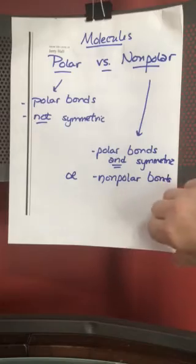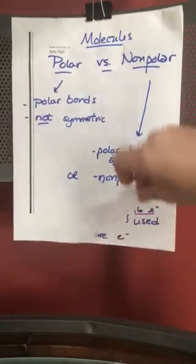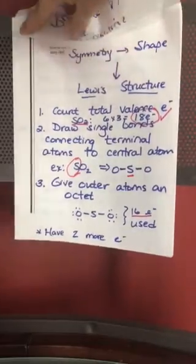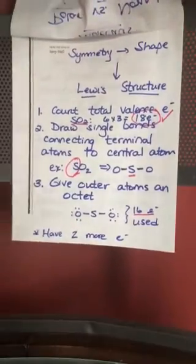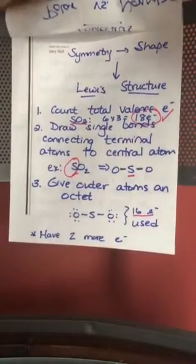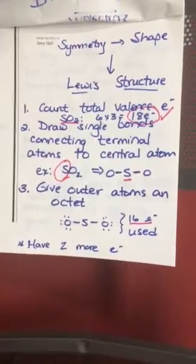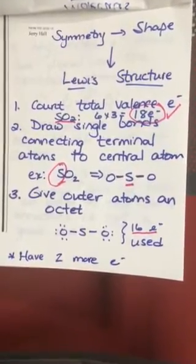All right, this is from Chapter 10 in your textbook if you want to review by reading. Okay, so how do we determine whether or not a molecule is symmetric? You have to draw a Lewis structure in order to do that.